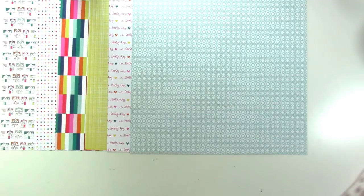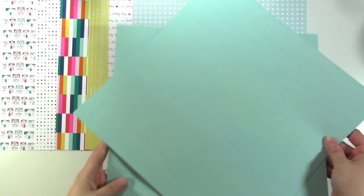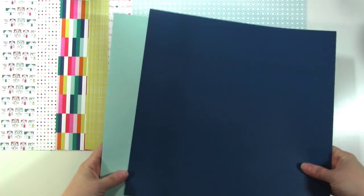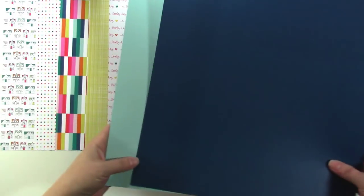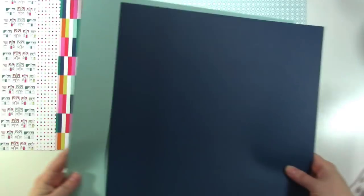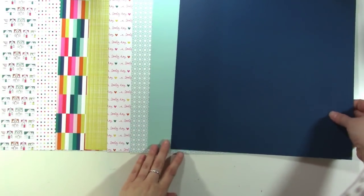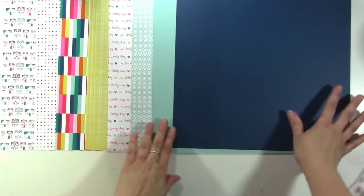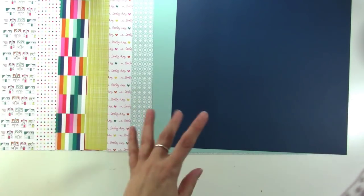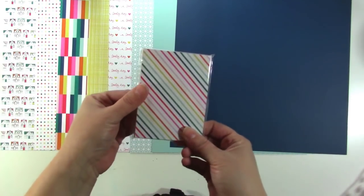And then you also get, this is cool, two sheets of solid colored cardstock. One side is light blue and one side is dark blue. So you can see there's two sheets of that in here. So that's really cool. So you get eight sheets total of patterned paper. So there's that option or your other option is to get the cards.